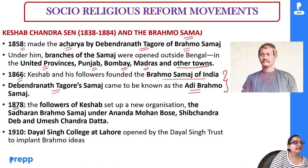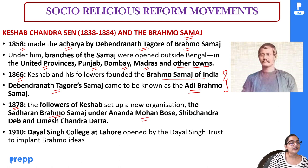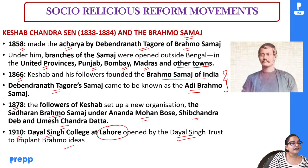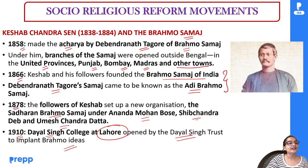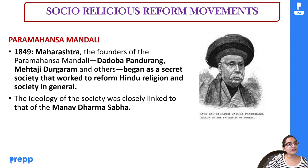In 1878, Keshab Chandra Sen's followers formed yet another organization — Sadharan Brahmo Samaj — whose key leaders were Ananda Mohan Bose, Shib Chandra Deb, and Umesh Chandra Dutt. In 1910, Dayal Singh Trust started Dayal Singh College at Lahore, propagating Brahmo Samaj ideas. Thus after Raja Ram Mohan Roy, Debendranath Tagore and Keshab Chandra Sen took the Brahmo Samaj forward, resulting in multiple branches: Brahmo Samaj of India, Adi Brahmo Samaj, and later Sadharan Brahmo Samaj.